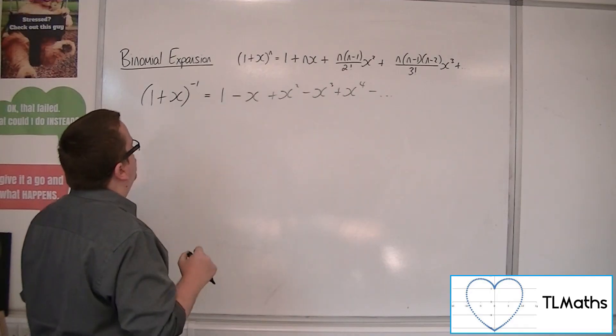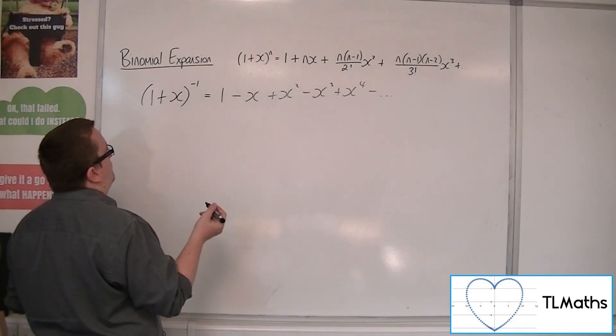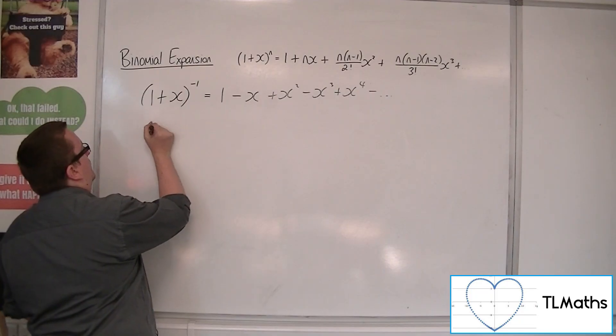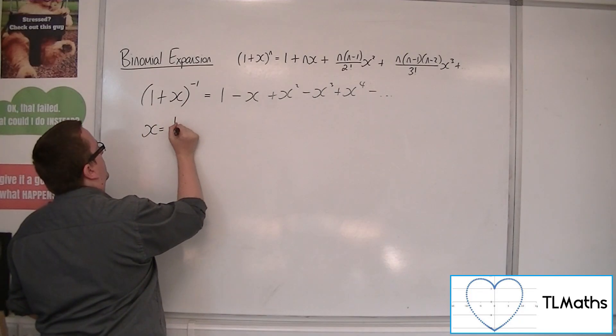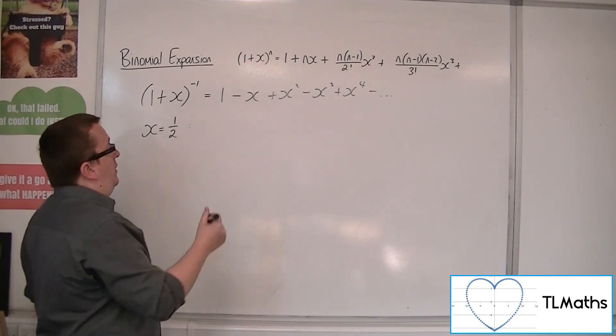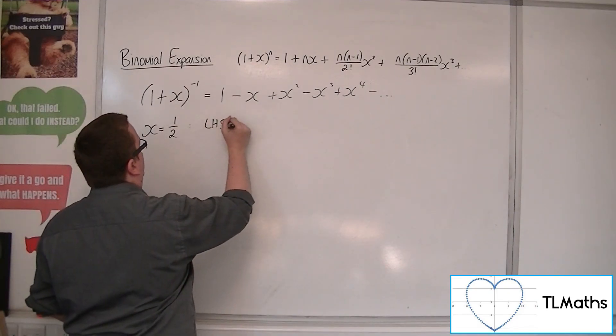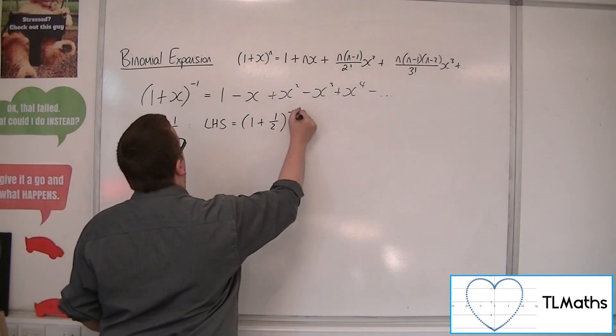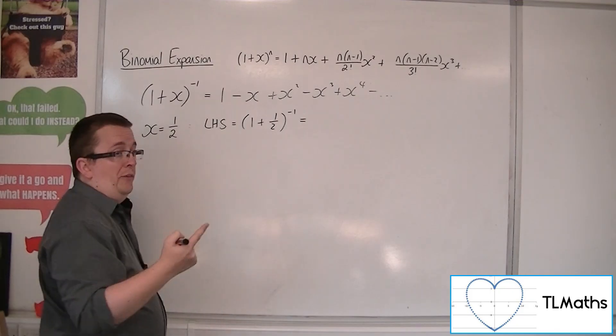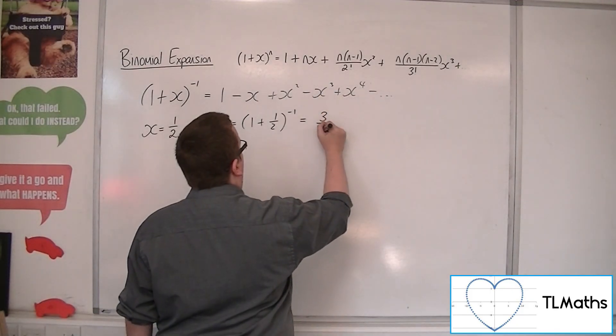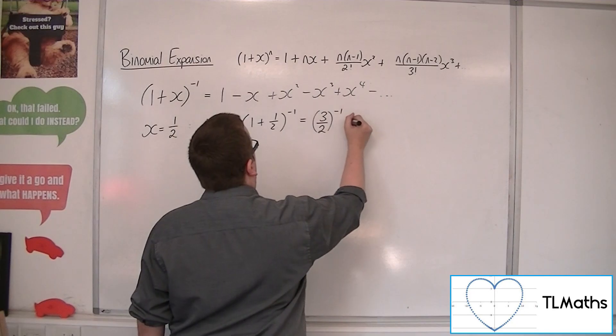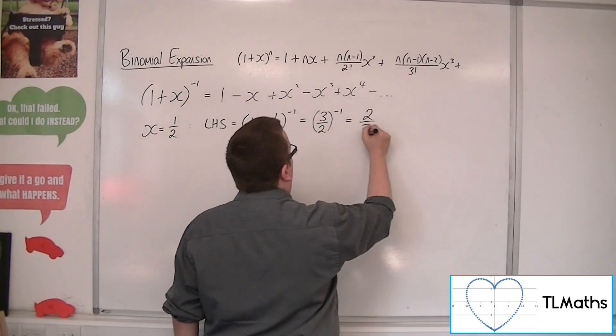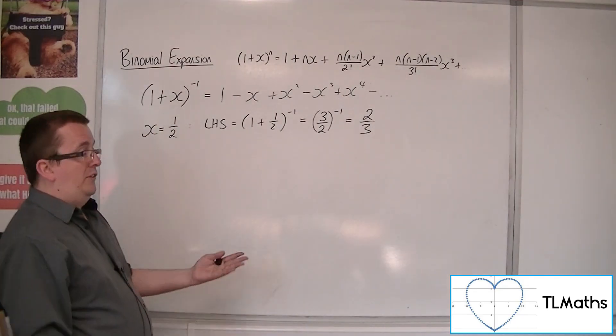So if we tried, let's say, x is a half, then the left-hand side is equal to 1 plus 1 half to the minus 1. Now, 1 plus 1 half is 3 halves. And so 3 halves to the minus 1 is 2 thirds. So that's the left-hand side.